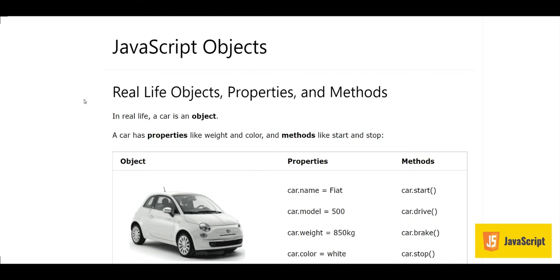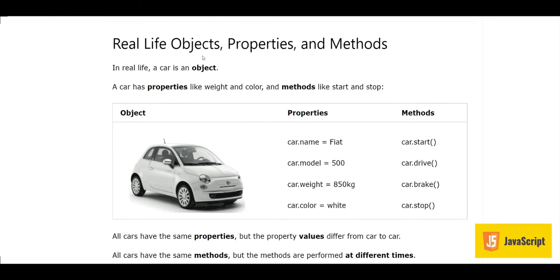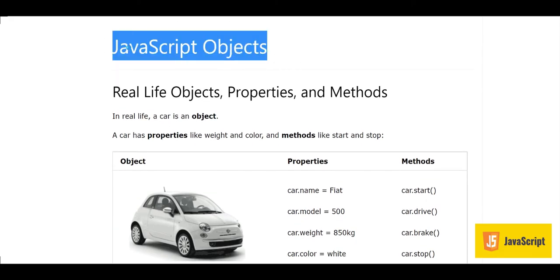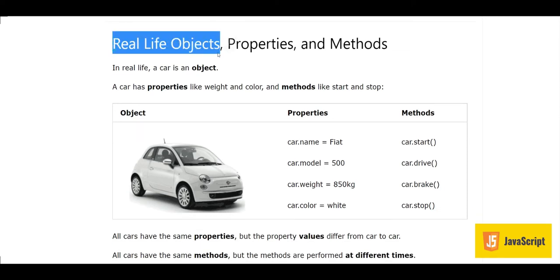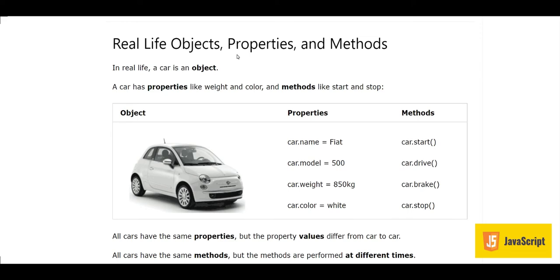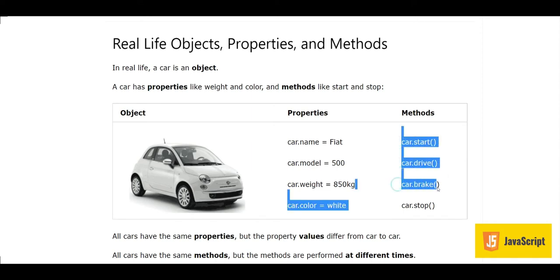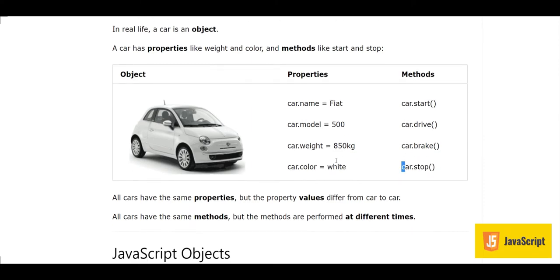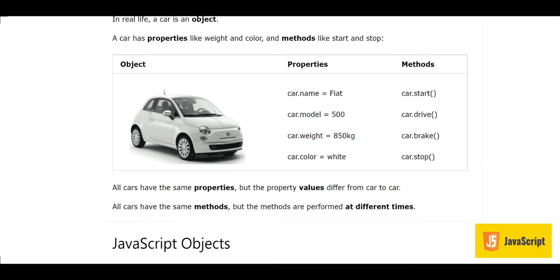Before we go to objects in JavaScript, let's look at what objects are in real life. Real-life objects have properties and methods. For example, take a car — a car is an object and it has certain properties like color, model, and name. It can have more properties. Then there are different methods associated with it like we can start the car, drive the car, brake the car, and stop the car.